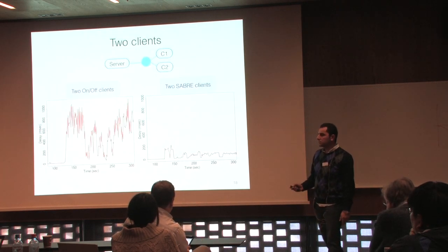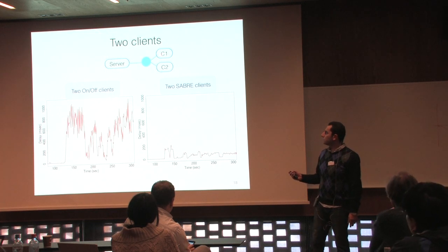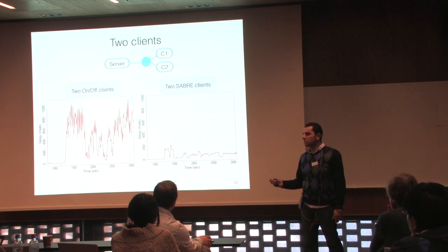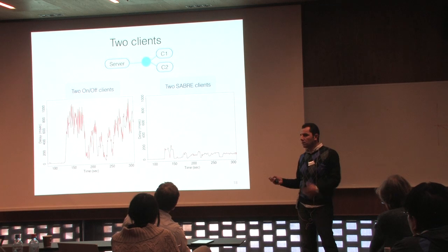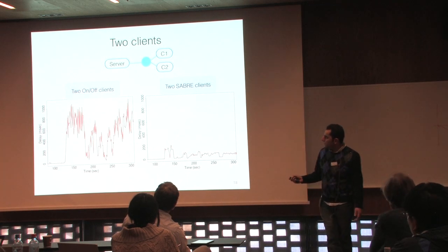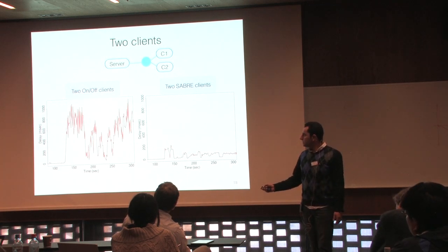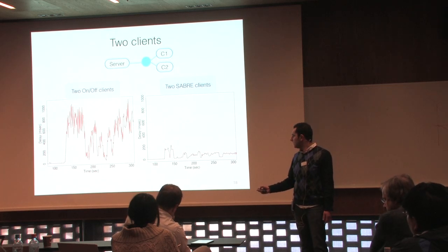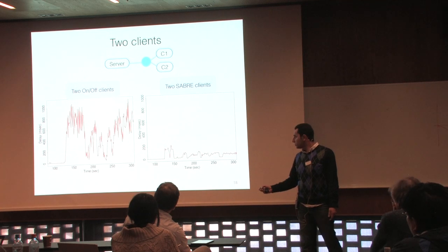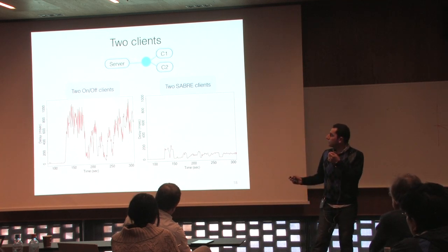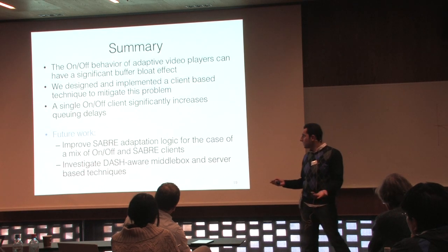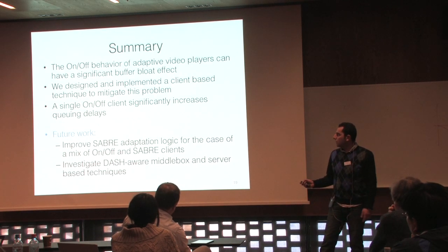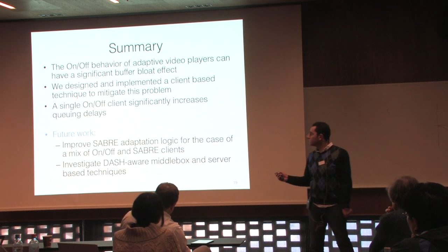We also ran experiments with multiple clients sharing the same residential gateway. With two traditional on-off clients, delay reaches 800–1000ms. With two SABRE clients, it's below 200 and 100ms respectively. With one on-off and one SABRE client, results are closer to the two on-off case.